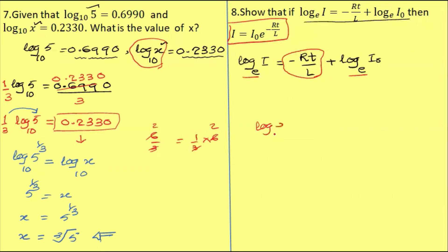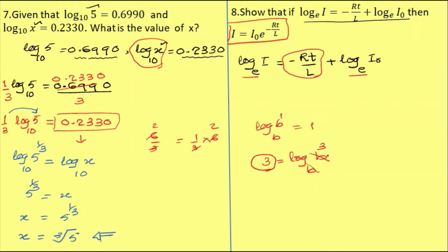Log b base b is 1. Log x base x is 1. Log 3 base 3 is 1. So you can see this plus 3, which means 1. The base is 1. Log b base b. It is divided into 3, so you can therefore write 2.